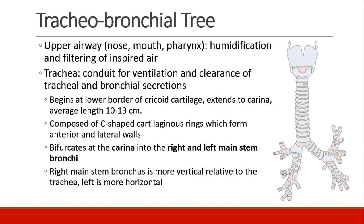Let's start by reviewing the anatomy of the tracheal bronchial tree. It begins in the upper airway — the nose, the mouth, and the pharynx — where air enters and is humidified and filtered. The air then passes through the trachea, which is the conduit for ventilation and a place where clearance of tracheal and bronchial secretions can occur.